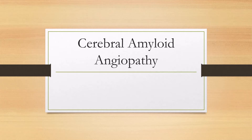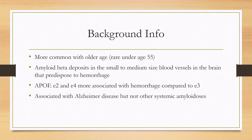Let's talk about cerebral amyloid angiopathy. This is a disease of old age — it's pretty rare under age 55 and gets more common with older age.